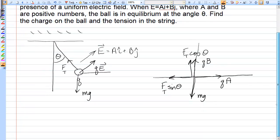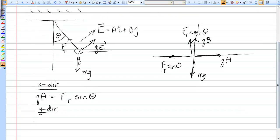So this will lead to two equations for equilibrium. In the X direction, forces to the right must balance forces to the left. So QA is Ft sine theta.